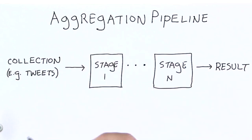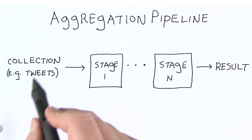Aggregation in MongoDB uses a pipeline. At the far left is your collection, for example, tweets.